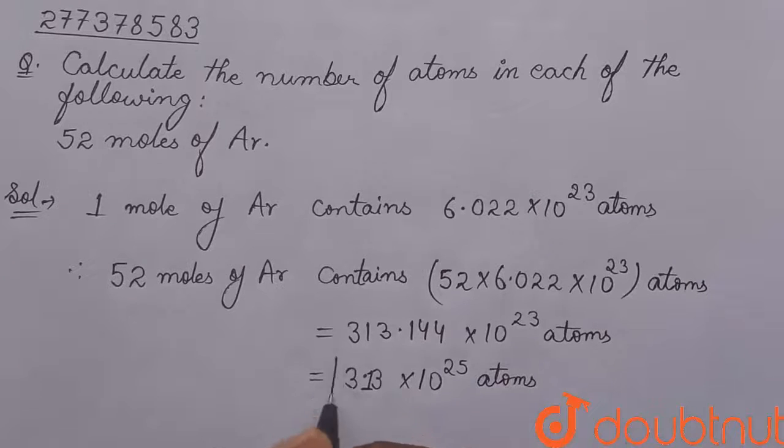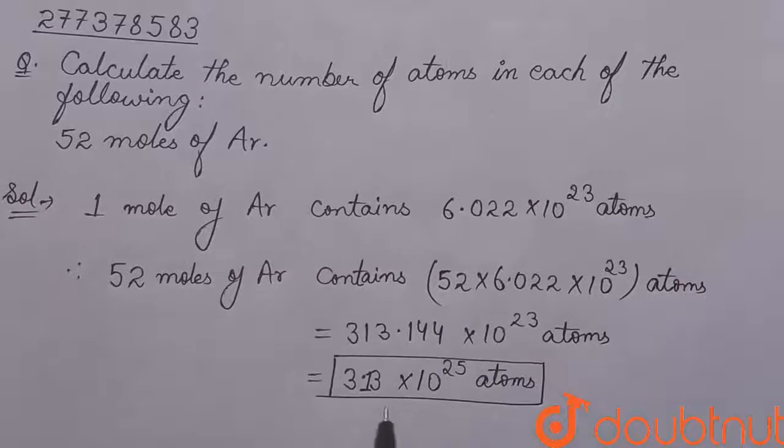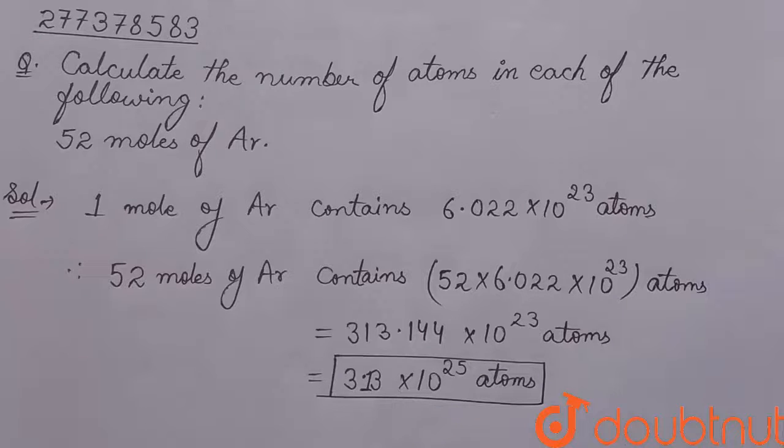This is our final answer. 3.13 x 10 to the power 25 atoms are present in 52 moles of argon. Thank you.